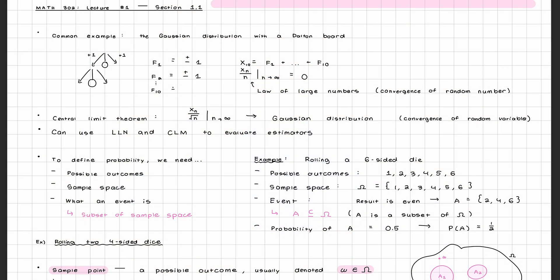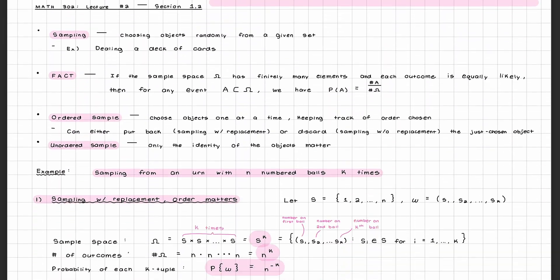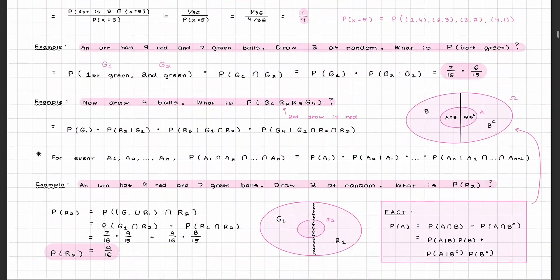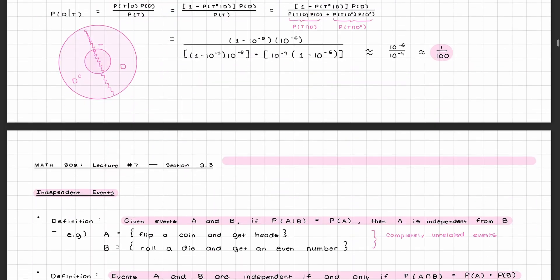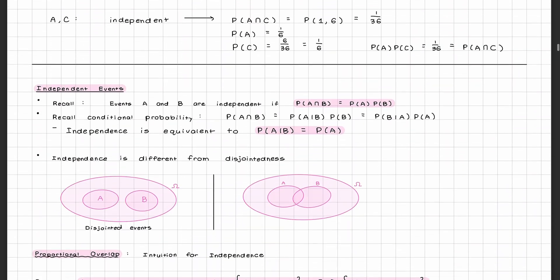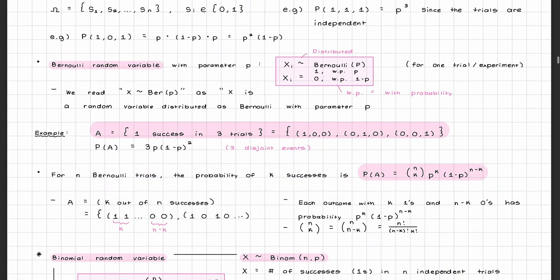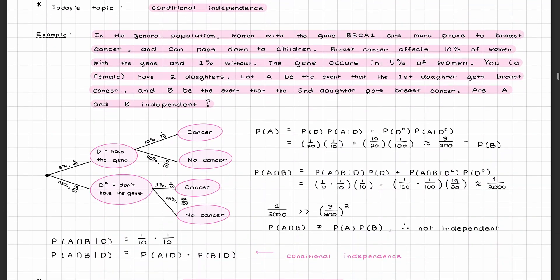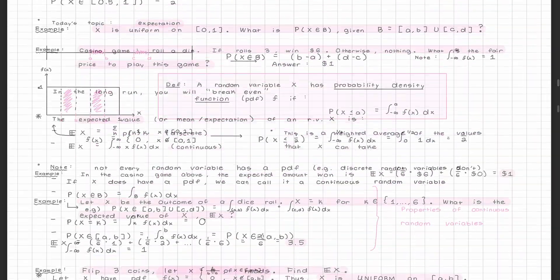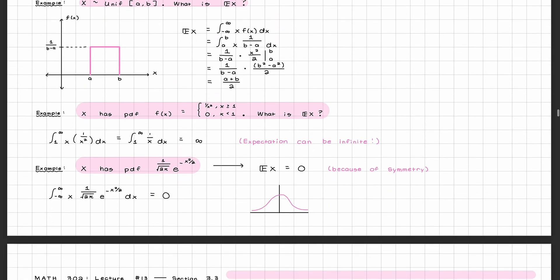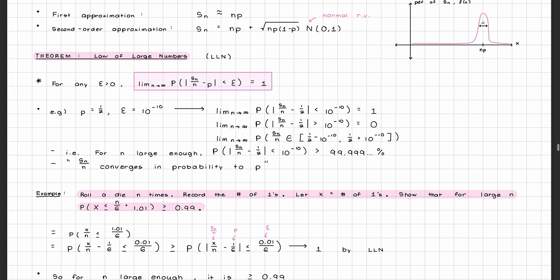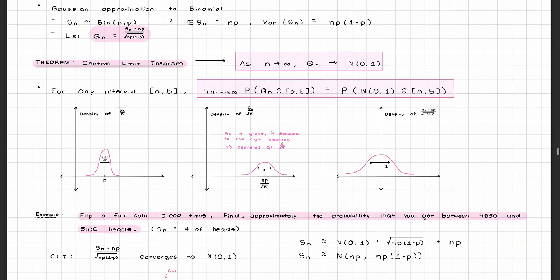Now let's get into what you're actually going to learn in Math 302 — buckle up, because there are a lot of topics. You'll start off with simple probability experiments to get you accustomed to terminology, sample spaces, and probabilities, before moving on to conditional probability and independence. Expect a lot of examples involving dice rolls and decks of cards. You'll then cover random variables, their probability and cumulative distribution functions, expectation and variance, the law of large numbers, and the central limit theorem.